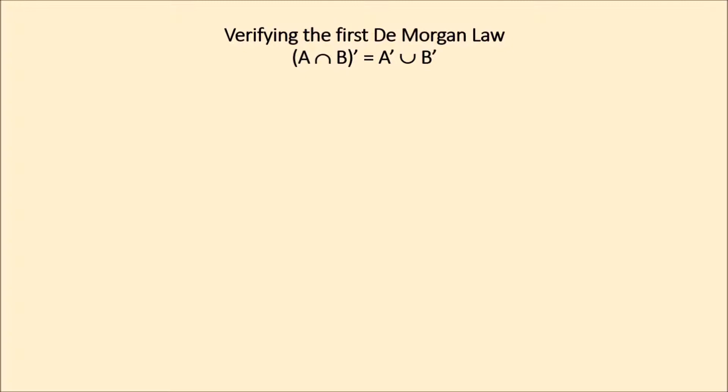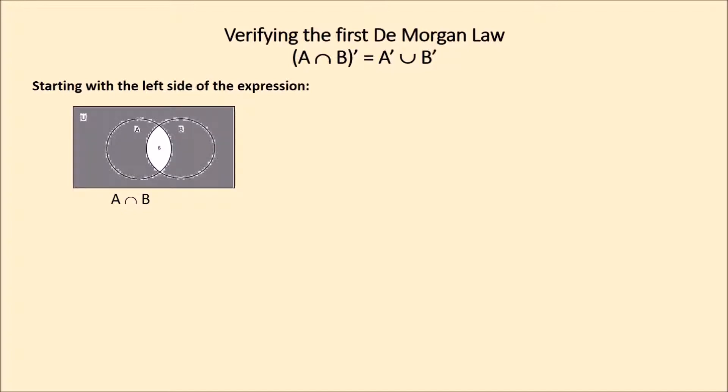Verifying the first De Morgan law: the complement of the intersection of subsets A and B is equal to the complement of subset A union the complement of subset B. Starting with the left side of the expression: subset A intersection subset B.